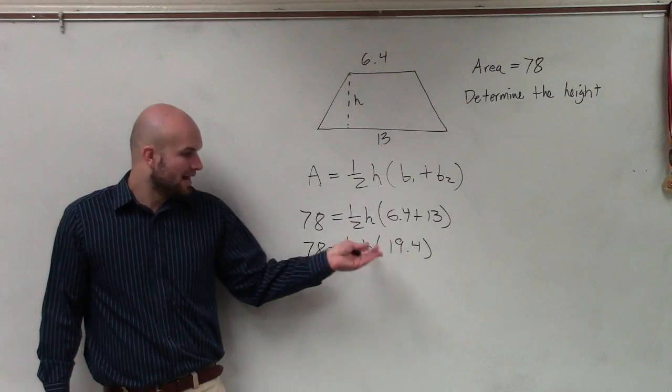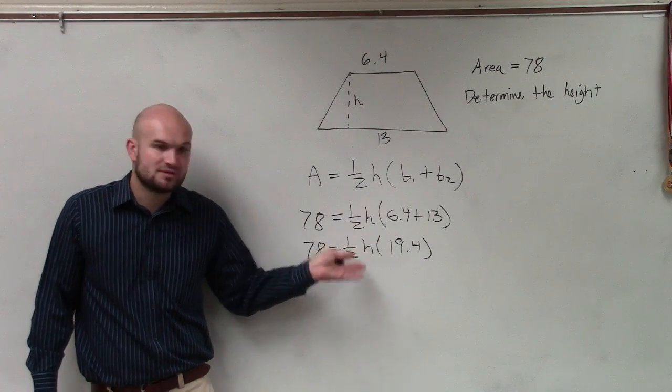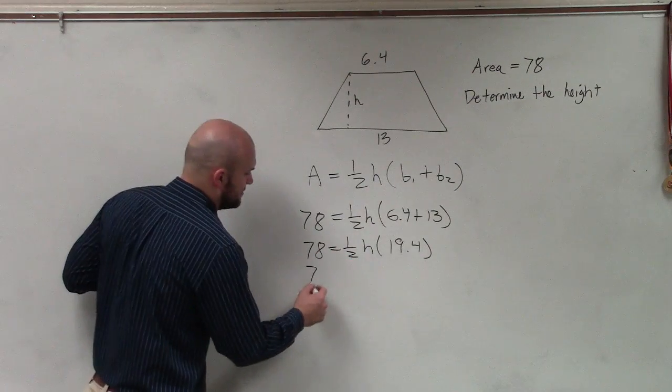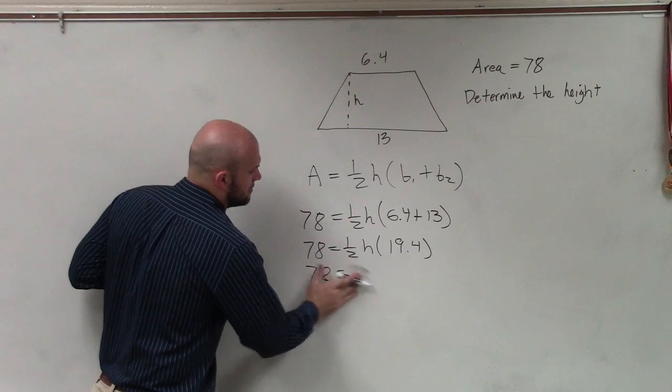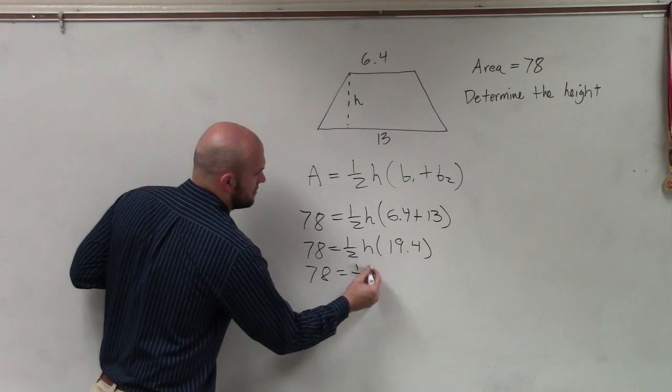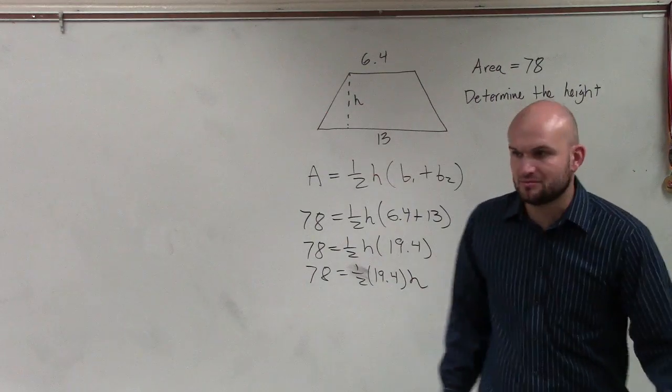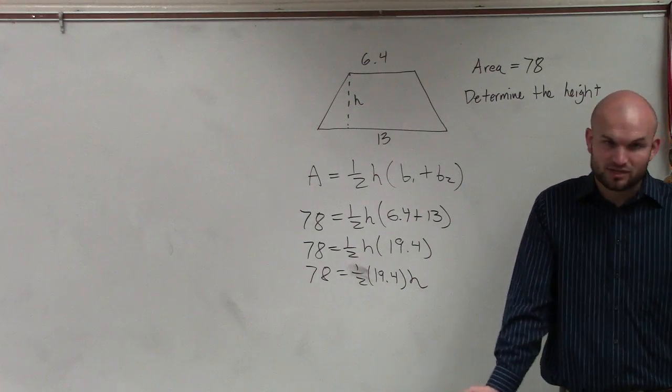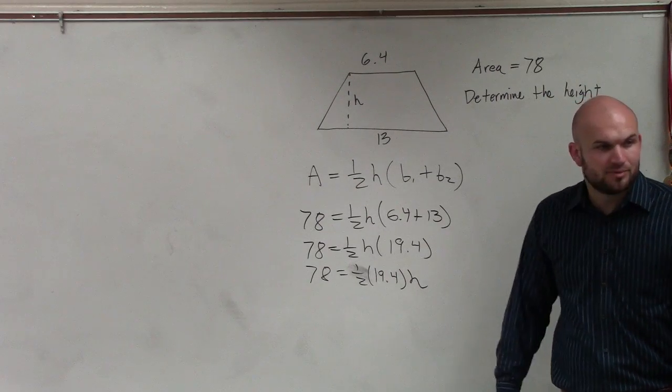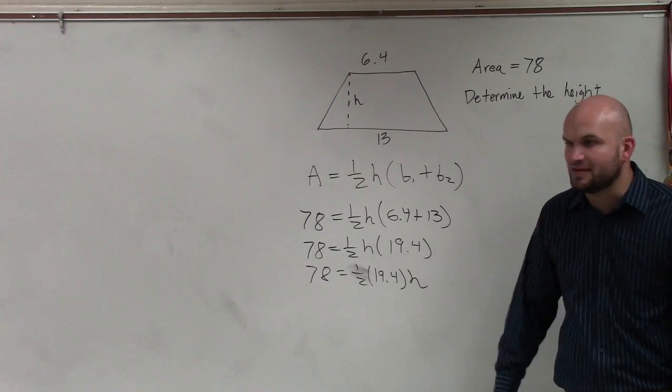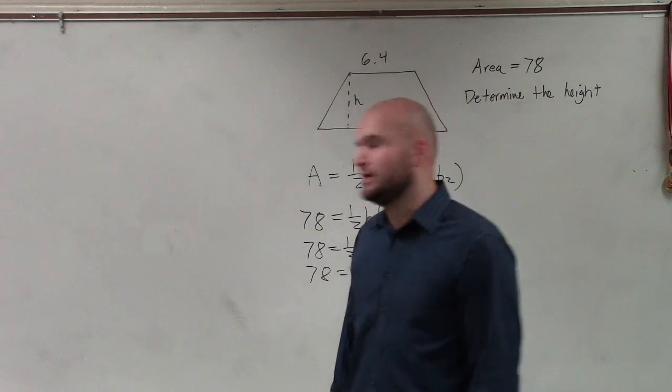Now I can multiply this. I can do 19.4 times one-half, or divide by 2. Is it okay if I rewrite it? Is 5 times 4 the same as 4 times 5? Yeah. So now I need to determine what is one-half of 19.4. You can use your calculator, or use your brain and say it would be 9.7.